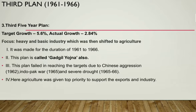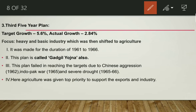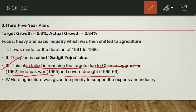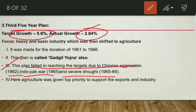The Third Five Year Plan ran from 1961 to 1966, with a target growth of 5.6%, but the actual growth was only 2.84%. The plan failed due to Chinese aggression in 1962, the Indo-Pak war in 1965, and severe drought in 1965–66. The plan had been launched focusing on both heavy industrialization and food grains production, but these unforeseen events caused it to be a complete failure.